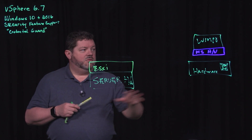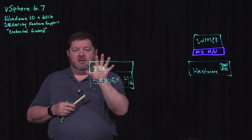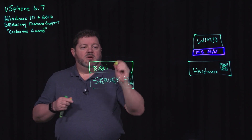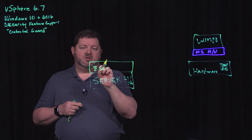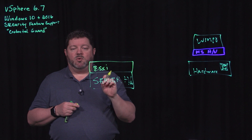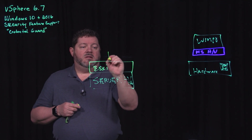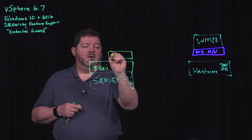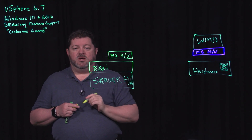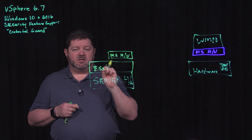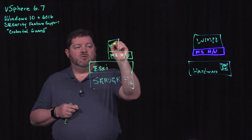Now, to duplicate this physical environment in the virtualized world, what ends up happening is when you enable virtualization-based security support within vCenter for that virtual machine, that virtual machine is now booting the Microsoft hypervisor, which then boots Windows 10.